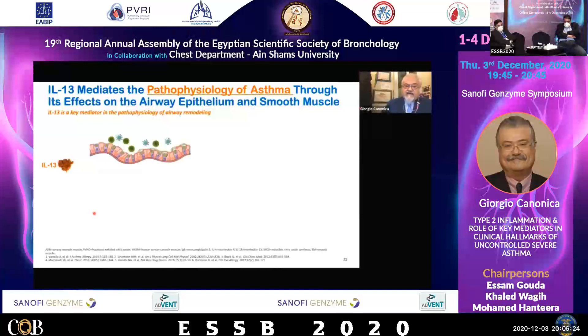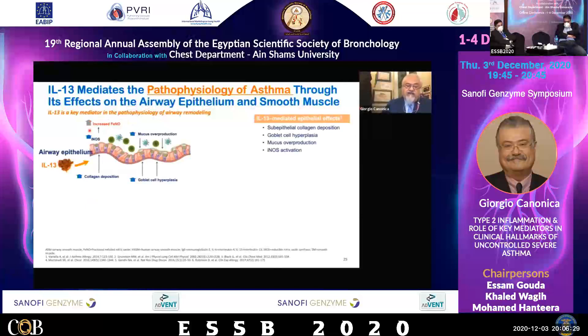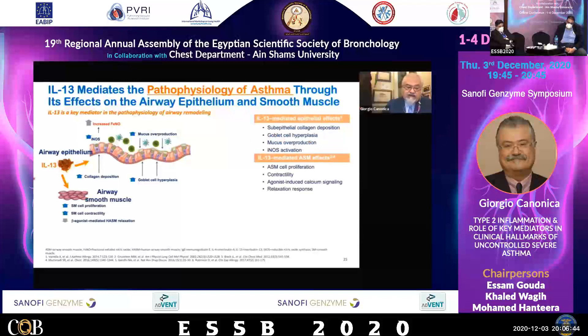As far as the pathophysiology of asthma, there are different steps. Increased FeNO — increased nitric oxide — is quite an important one. This is driven by the epithelium, whereas the smooth muscle has a different story.